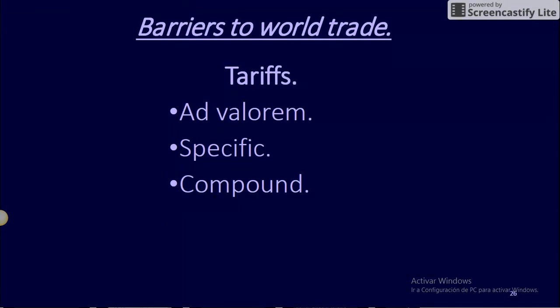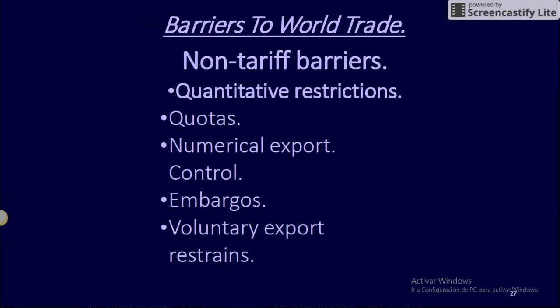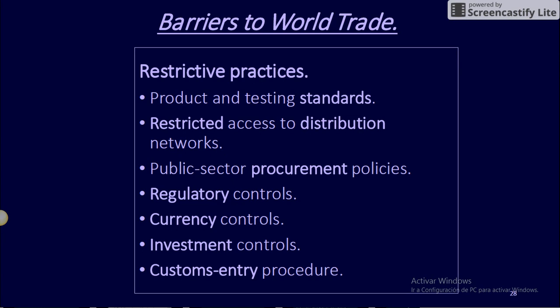Main types of trade associations and barriers to world trade. Tariffs: Ad valorem, Specific, Compound. Non-tariff barriers: Quantitative restrictions, Quotas, Numerical export controls, Embargoes, Voluntary export restraints. Restrictive practices: Product and testing standards, Restricted access to distribution networks, Public sector procurement policies, Regulatory controls, Currency controls, Investment controls, Customs entry procedures.